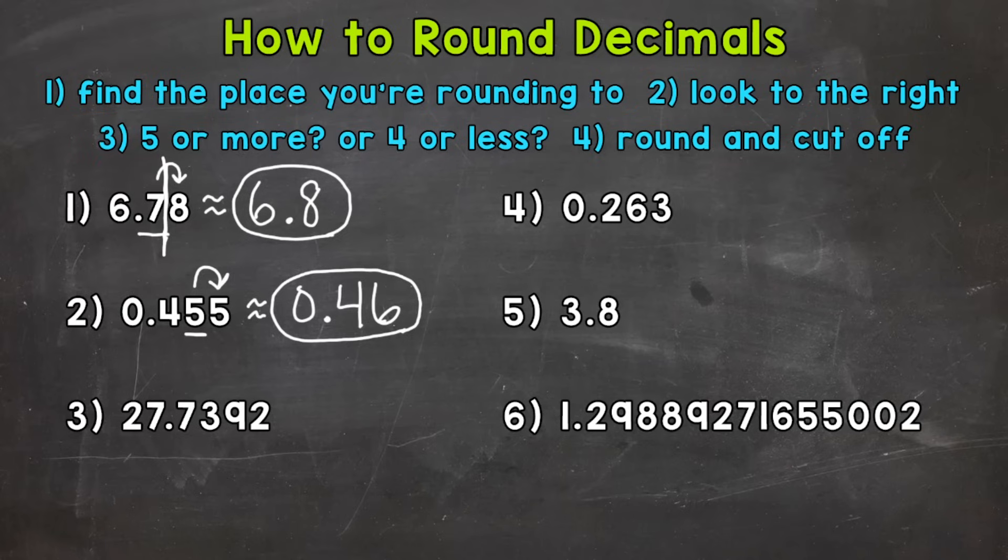Let's move on to number 3, where we have 27 and 7,392 ten thousandths. Let's round this one to the thousandths place. So this 9 right here. Look to the right, we have a 2. So 5 or more, or 4 or less. Well that's 4 or less, so we keep that 9 the same here. And our final rounded answer. 27 and 739 thousandths.